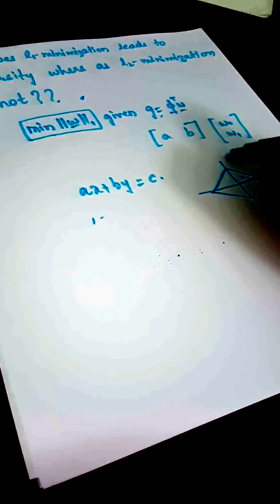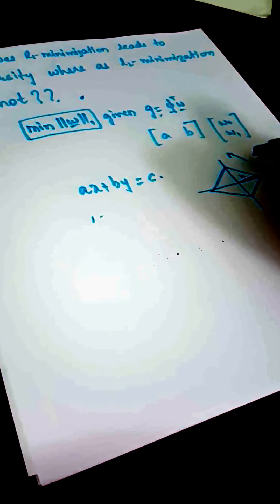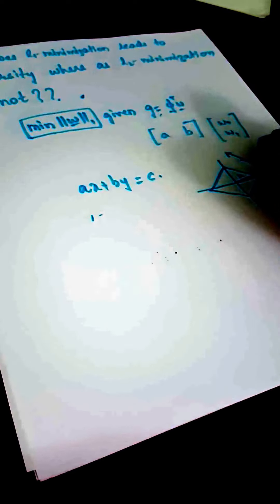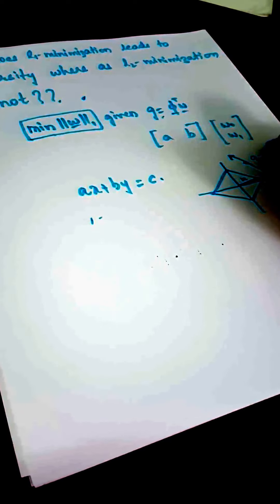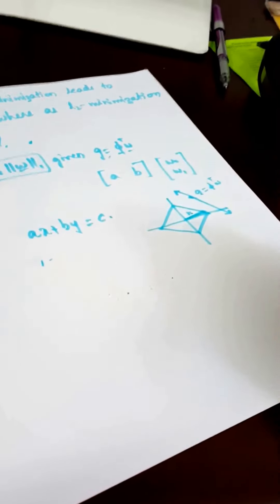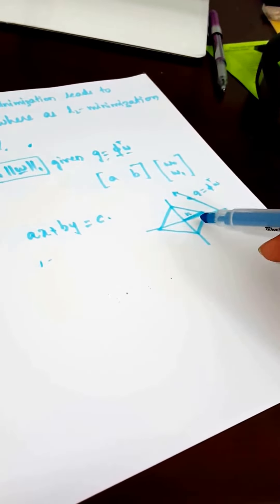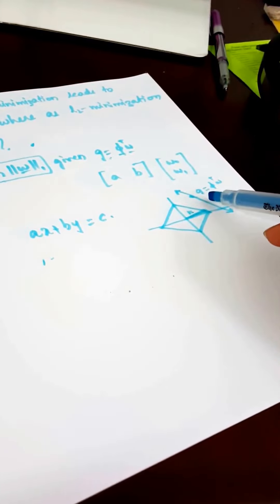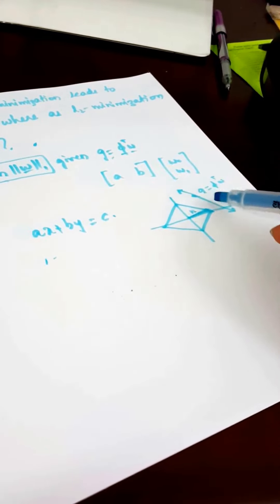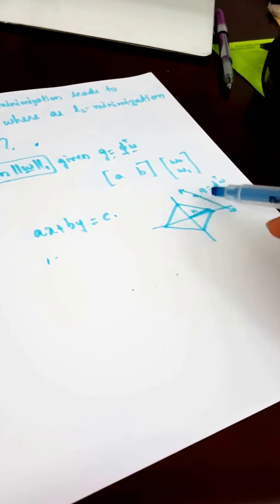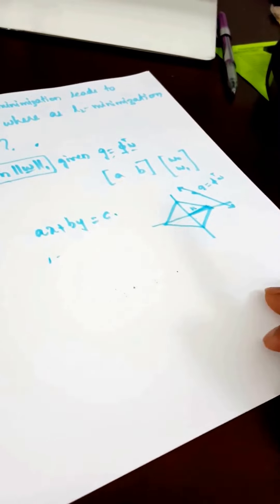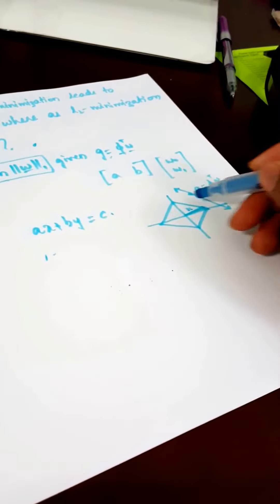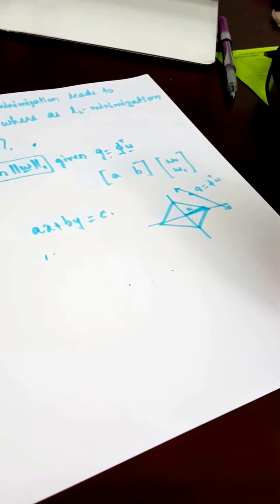Let us represent the line equation to be G equal to Phi transpose W. Now we want to minimize this particular norm given this constraint, so we need to satisfy both these terms. The minimization would be when these two intersect, when these two touch for the first time.